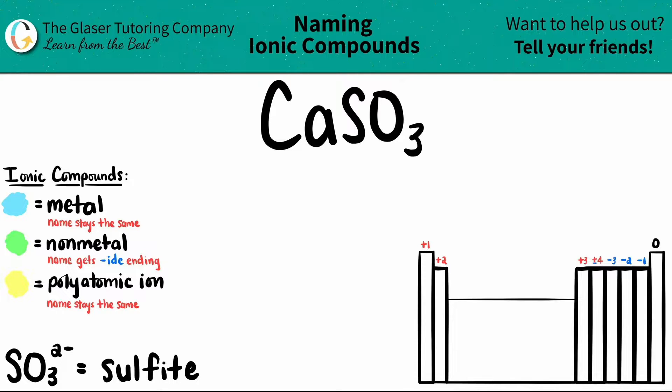Now the first thing is that I see three individual elements: I see calcium, sulfur, and oxygen. When you see at least three or more elements in a compound, one of them has to be a polyatomic.